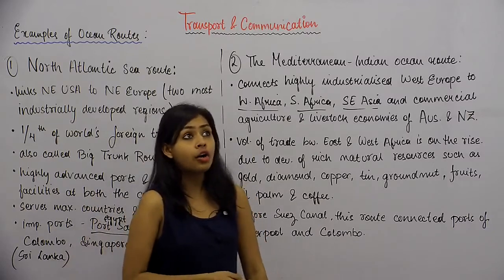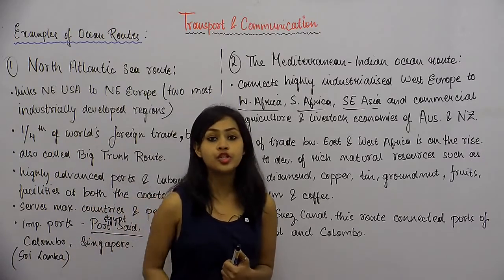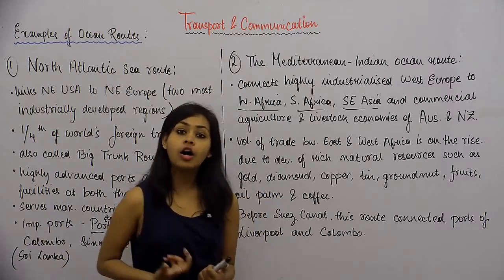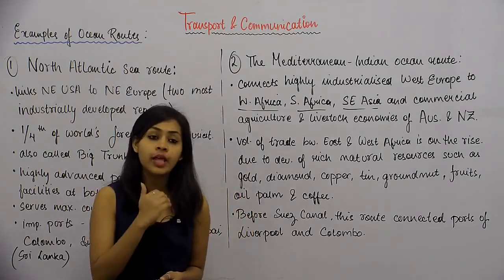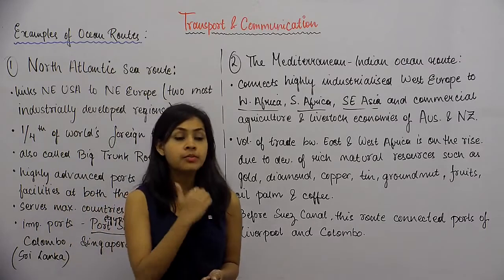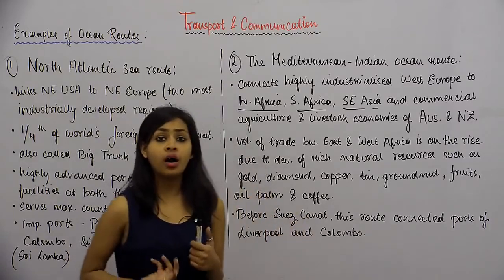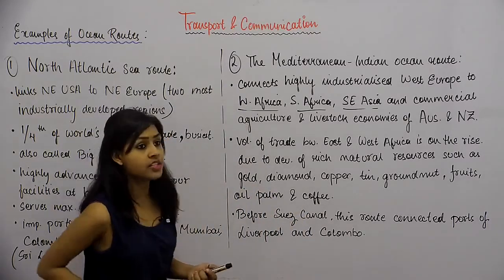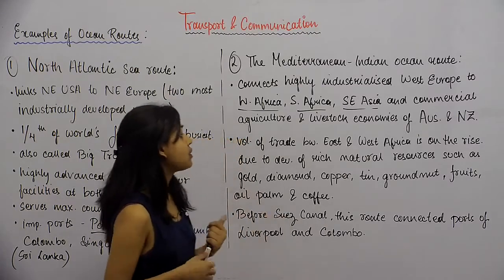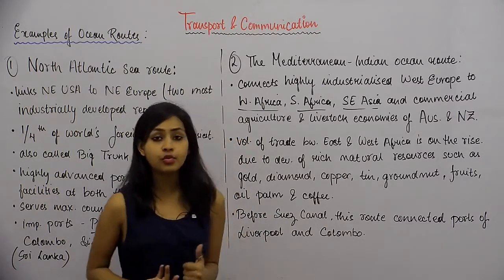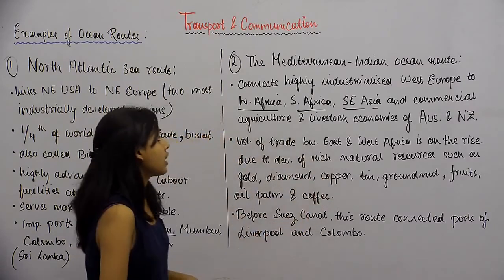Australia and New Zealand are economies where commercial agriculture happens — farming that is not for personal consumption but mostly for commercial purposes, to be sold in the market. Livestock is also raised at higher levels than most other regions of the world. These two countries are therefore important for trading purposes, and that's where the relevance of the Mediterranean Indian Ocean route comes in.